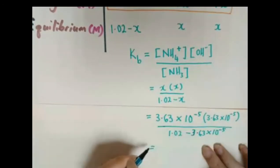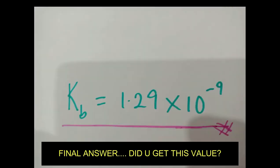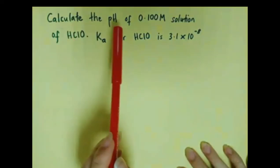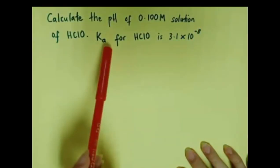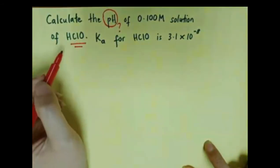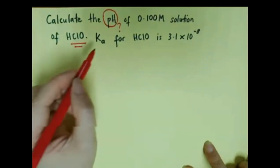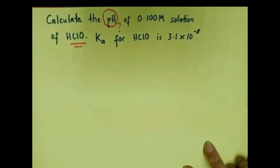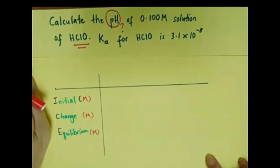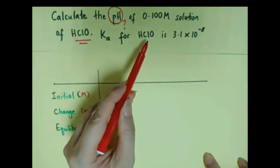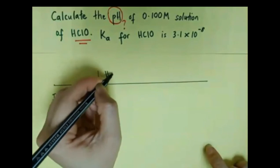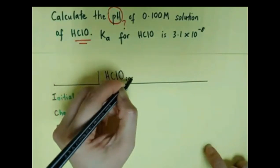The final answer for Kb is 1.29 times 10 to the power of negative 9. Now let's try the next question: calculate the pH of a 0.1 molar solution of hypochlorous acid. The Ka for hypochlorous acid, HClO, is 3.1 times 10 to the power of negative 8. As usual, we prepare the ICE table.